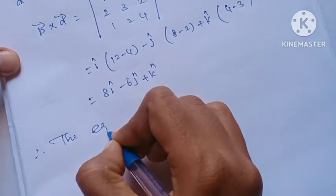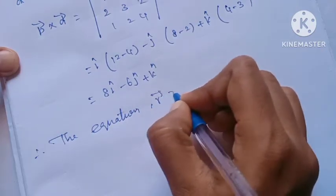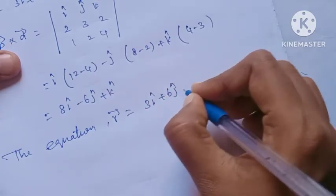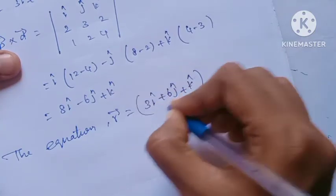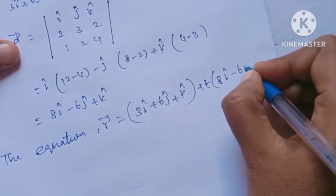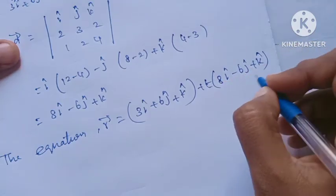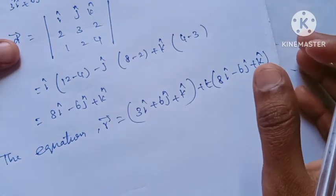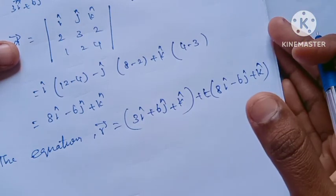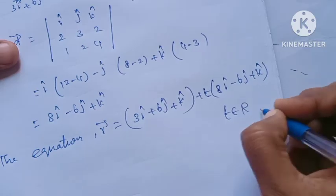Therefore the parametric form of the vector equation is: r = (3i + 6j + k) + t(8i minus 6j + k), where t is the parameter. That is the answer to the question. Thank you. In the next one, t belongs to r.